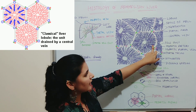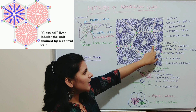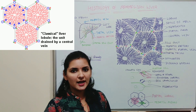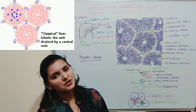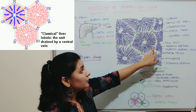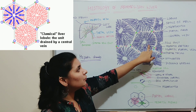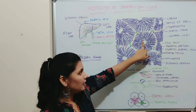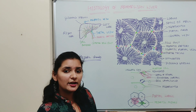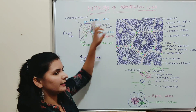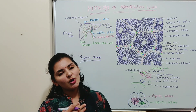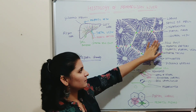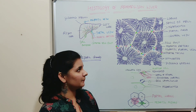Blood from the hepatic artery and the portal vein enters the sinusoids. In the sinusoids, exchange of gases, nutrients, and detoxification of blood takes place. After this process, blood from the sinusoids moves toward the center and enters the central vein. The central veins of all the lobules join together to form the hepatic vein, which carries all the blood from the liver to the heart.